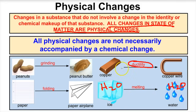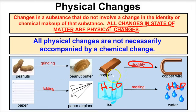All physical changes are not necessarily accompanied by a chemical change. When we take peanuts and make peanut butter, we're not changing the chemical composition — this is only a physical change. The same goes for the paper airplane, the copper wire, and the melting ice.